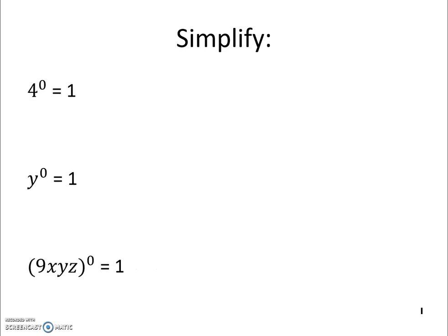When we're simplifying here, we have a rule for an exponent of 0. If I have something to the 0 power, it is 1. So 4 to the 0 power is 1, and y to the 0 power is 1. And the quantity 9xyz in parentheses to the 0 power is also 1.